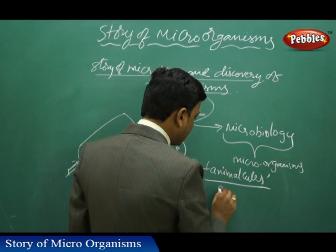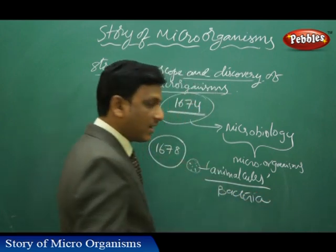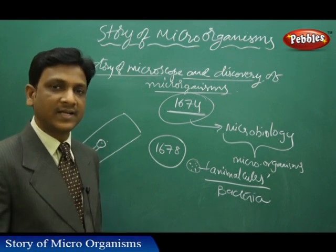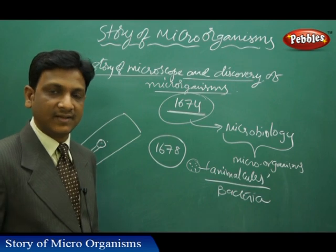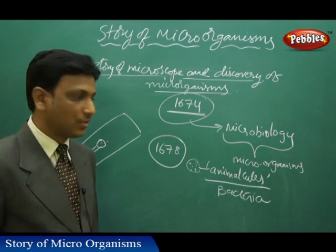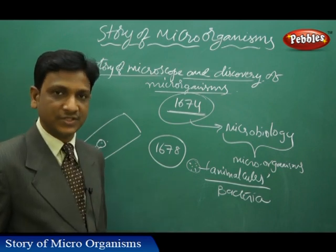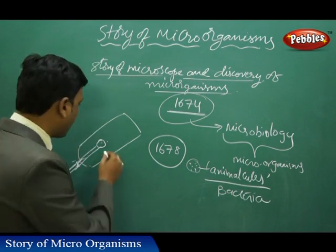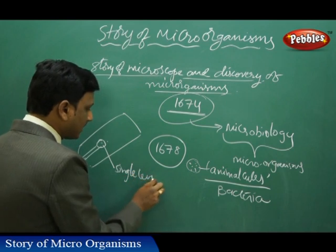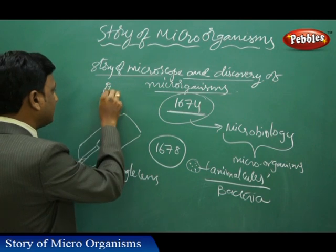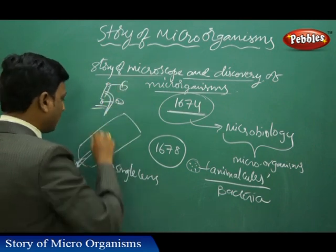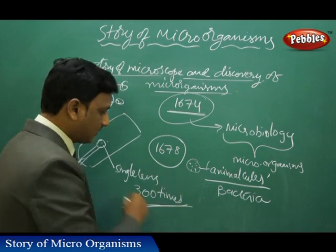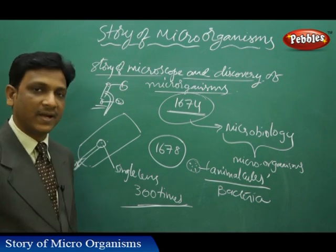Later, these animalcules were named as bacteria. Apart from bacteria, he observed many more moving, minute creatures — microorganisms — which got their respective names later as scientists observed their features and classified them into different groups and classes. His microscope had only one lens — a single-lens microscope. Present-day microscopes have an objective and an eyepiece, meaning two lenses, but his single-lens microscope was powerful enough to magnify objects up to 300 times.